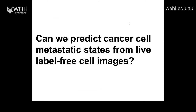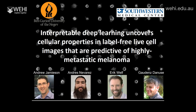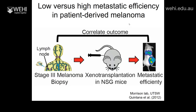Back to a specific project: the question we asked is, can we predict cancer cell metastatic states from live, label-free cell images? The project is titled 'Interpretable Deep Learning Uncovers Cellular Properties in Label-Free Live Cell Images That Are Predictive of Highly Metastatic Melanoma.' In short, we used deep learning machinery and were able to distinguish between high and low metastatic efficiency cells, but then the challenge was to actually interpret what the network had learned — because visually we couldn't see anything.